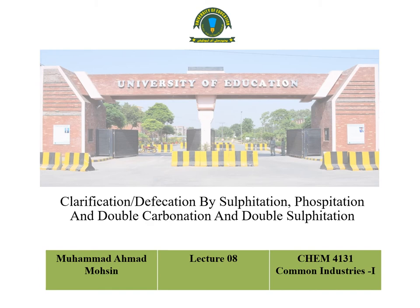As in the previous lecture, we discussed the clarification process whose objective is to remove all kinds of impurities from cane juice that may be present in colloidal, suspended, or soluble form. For this purpose, different methods are used like liming, carbonation, sulfitation, phosphatation, etc.